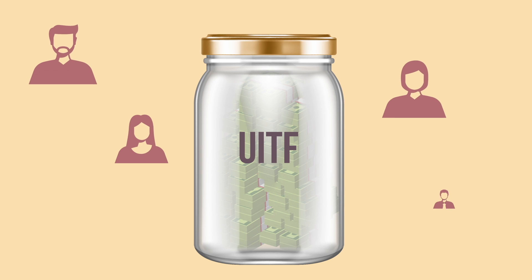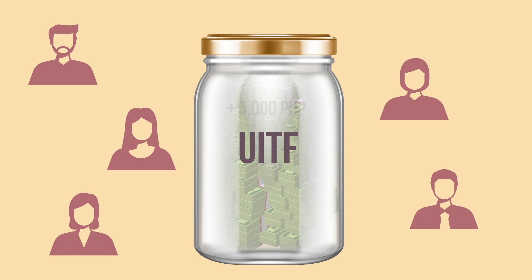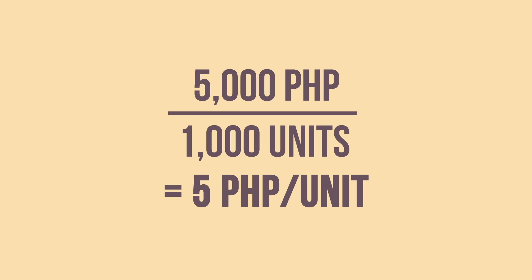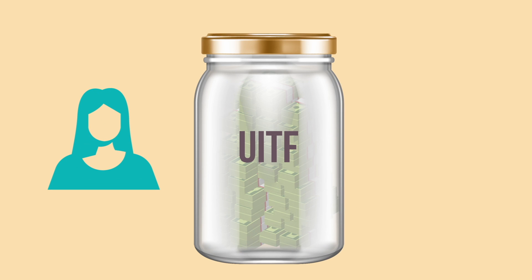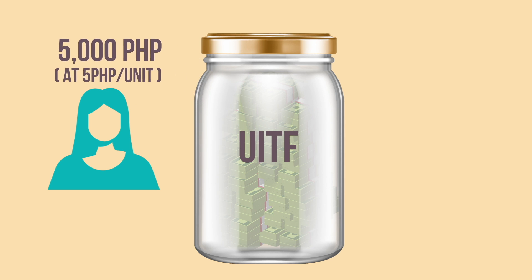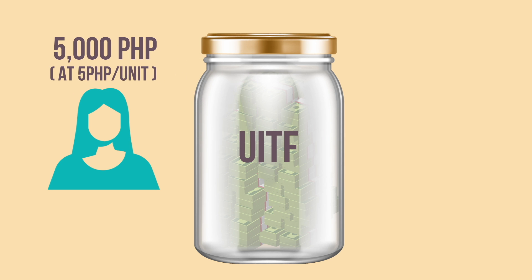If your money in the jar goes up, say 5,000 pesos, your 1,000 units are now worth 5,000 pesos, so each unit is worth 5,000 pesos. When you want to take your money out or redeem, you simply sell or give back your units, and the bank gives you the equivalent amount of money based on the current value of the jar.